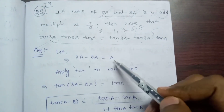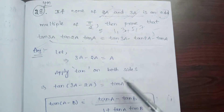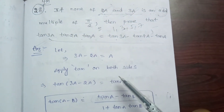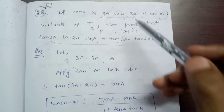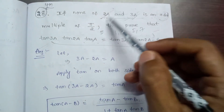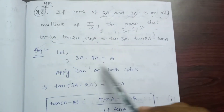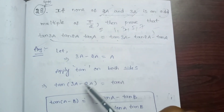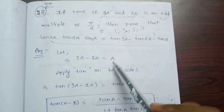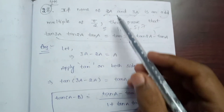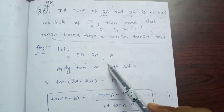The key condition here is that 3a minus 2a is equal to a. So the difference between 3a and 2a is simply a, and this is the same condition we are going to use here.